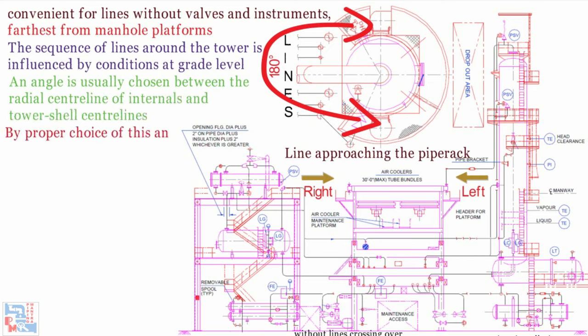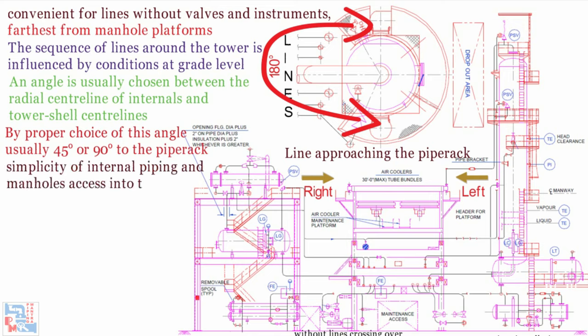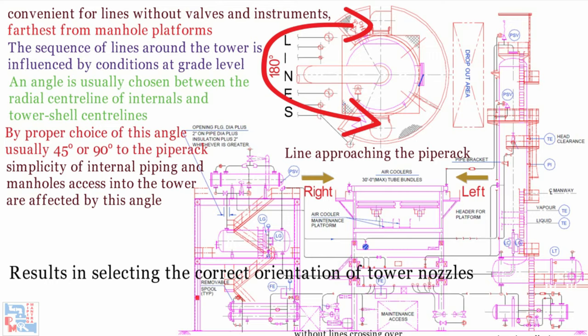An angle is usually chosen between the radial center line of internals and tower center lines. By proper choice of this angle, usually 45 or 90 to the pipe rack, many hours of work and future inconvenience can be saved. Tower piping, simplicity of internal piping and manhole access into the tower are affected by this angle. After this, the information produced by the designer results in selecting the correct orientation of tower nozzle.